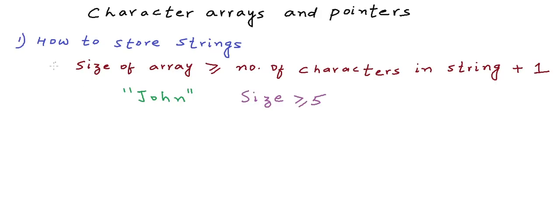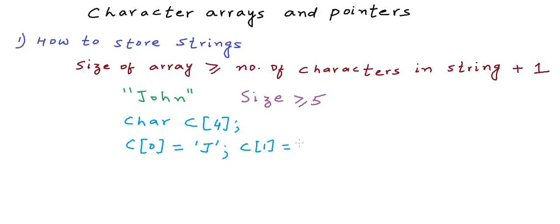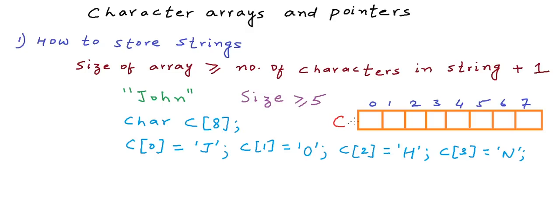The obvious question is: why do we need space for one extra character? If we declare a character array of size four, we can store all the characters in 'john' — j at index 0, o at index 1, h and n at indices 2 and 3. But if we have a character array of size eight and store 'john', we have not stored the information that 'n' is the last character in the string — we have not stored where the string ends.